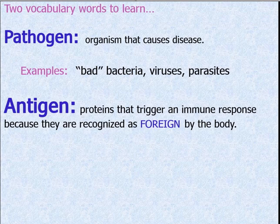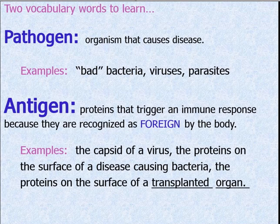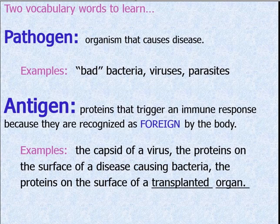An antigen, on the other hand, is a foreign protein — anything recognized by the body as foreign that triggers an immune response. That could be the capsid of a virus, the proteins on the surface of disease-causing bacteria, or the proteins on the surface of a transplanted organ. That's why we reject organs: if the proteins are not a tissue match, white blood cells identify it as foreign and attack, potentially destroying the kidney. Even with a tissue match, the recipient will likely need immunosuppressant drugs for life, making them more susceptible to diseases and even cancer.